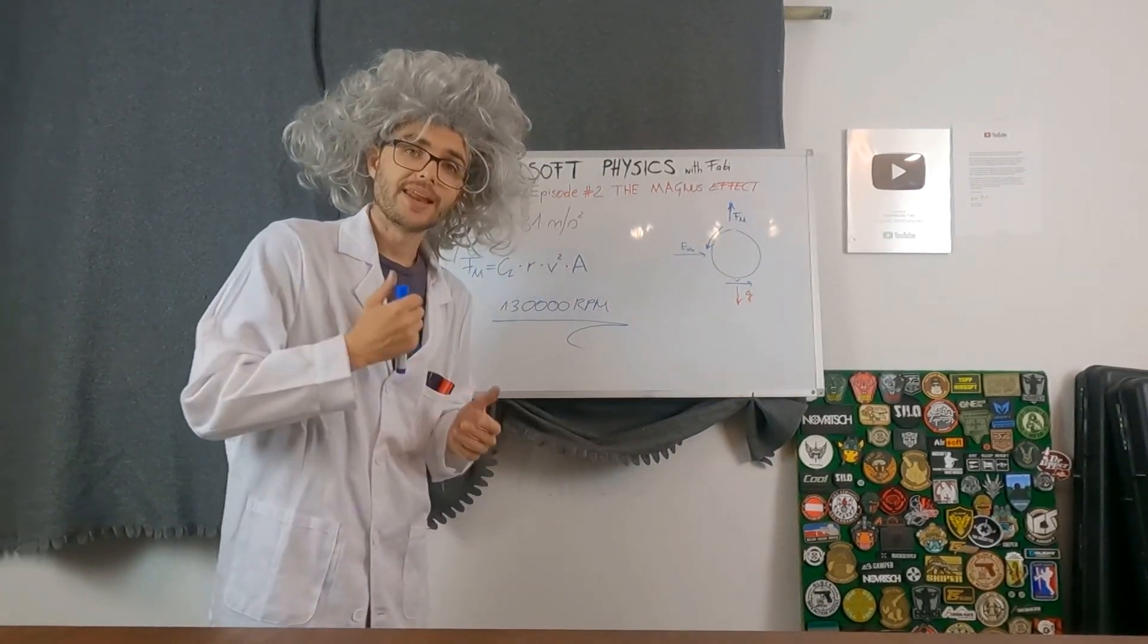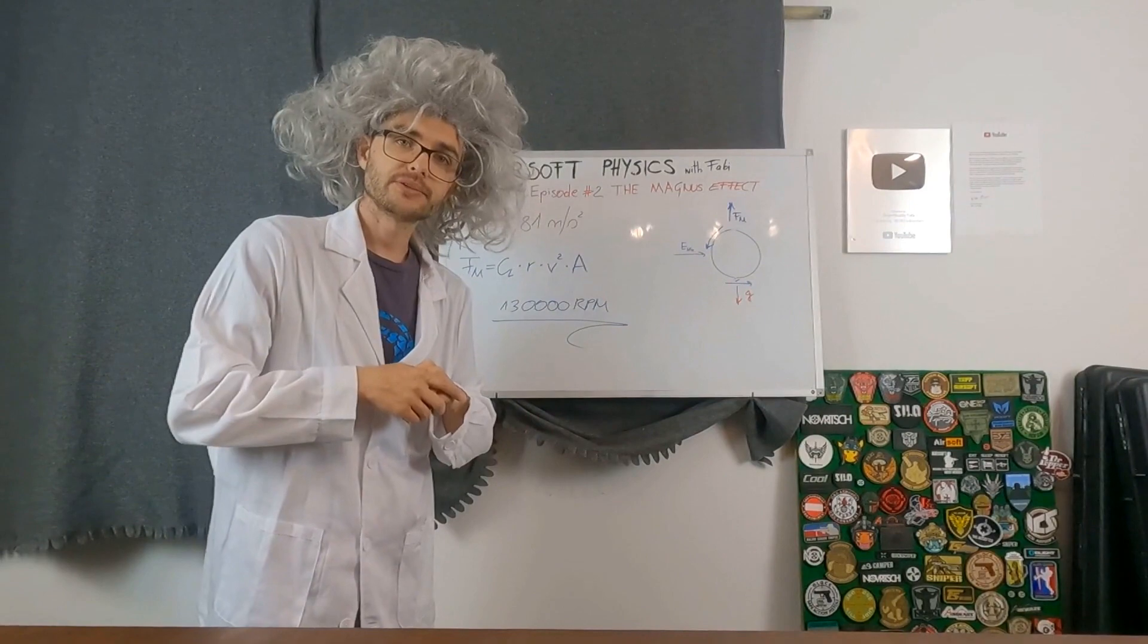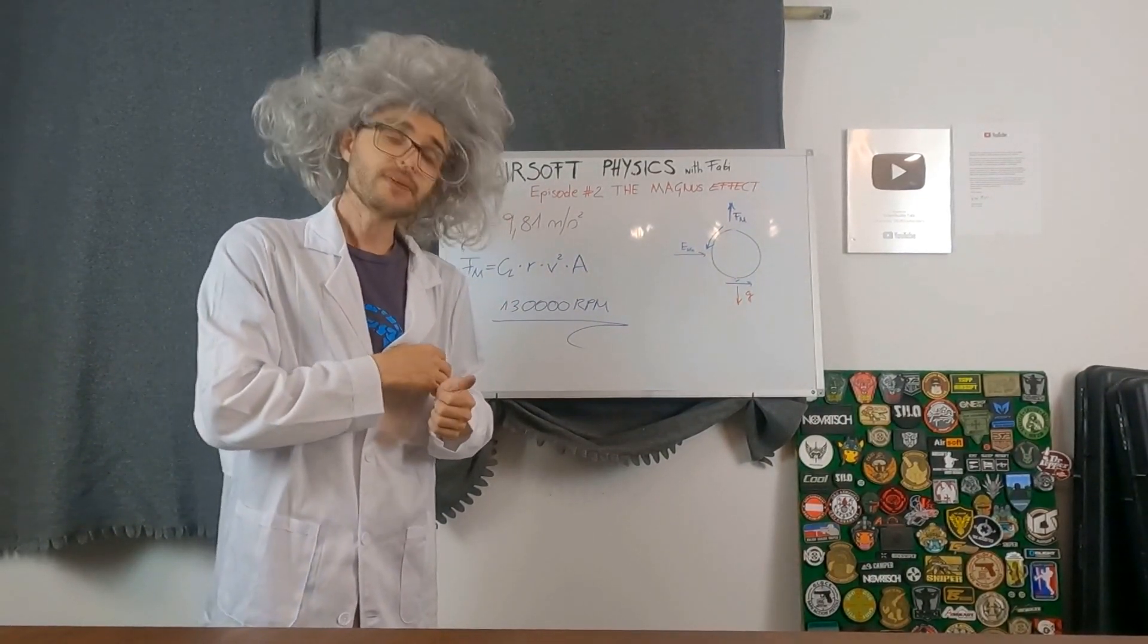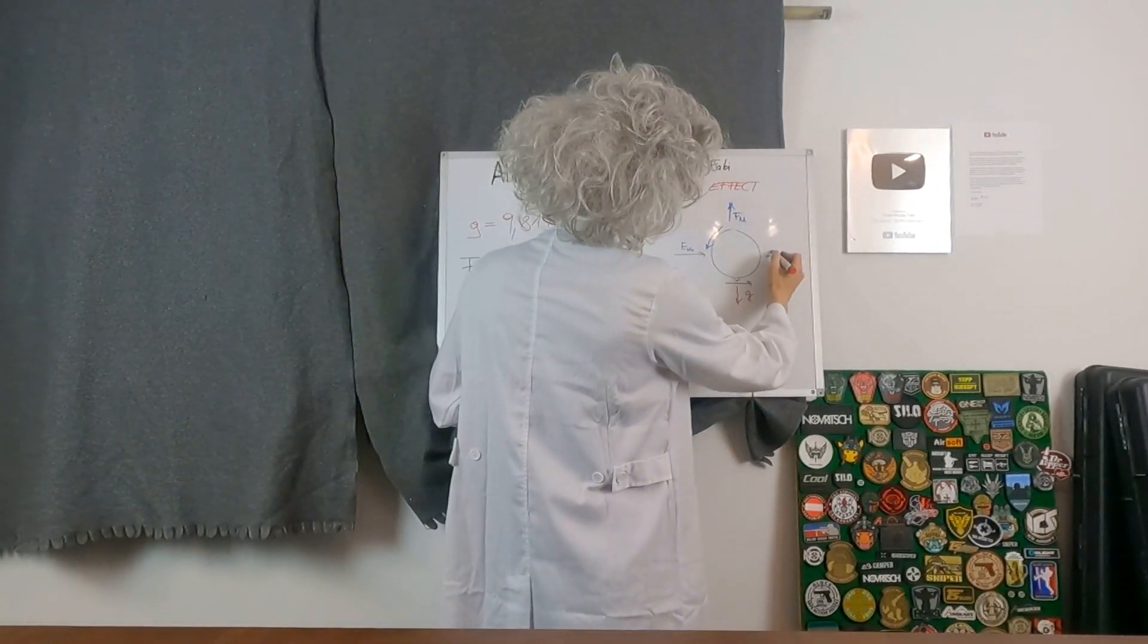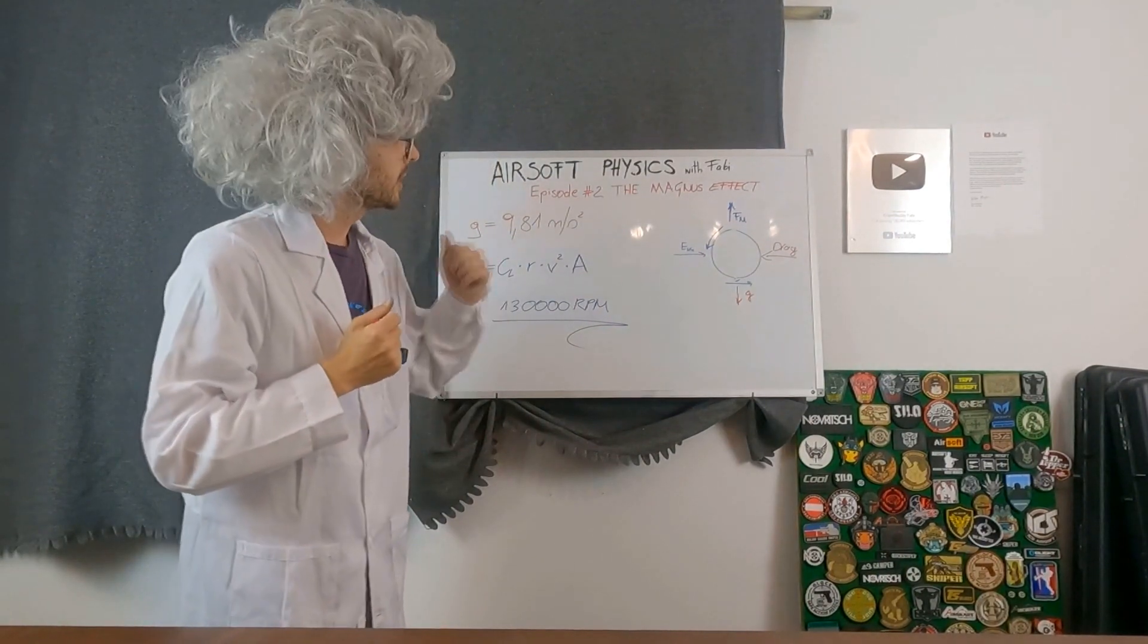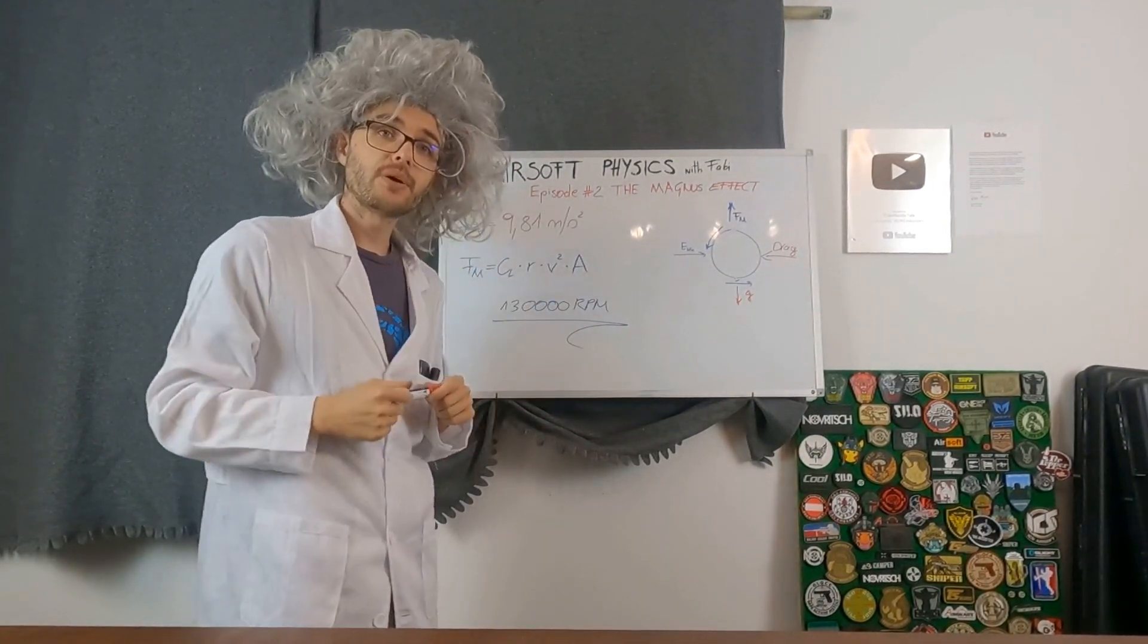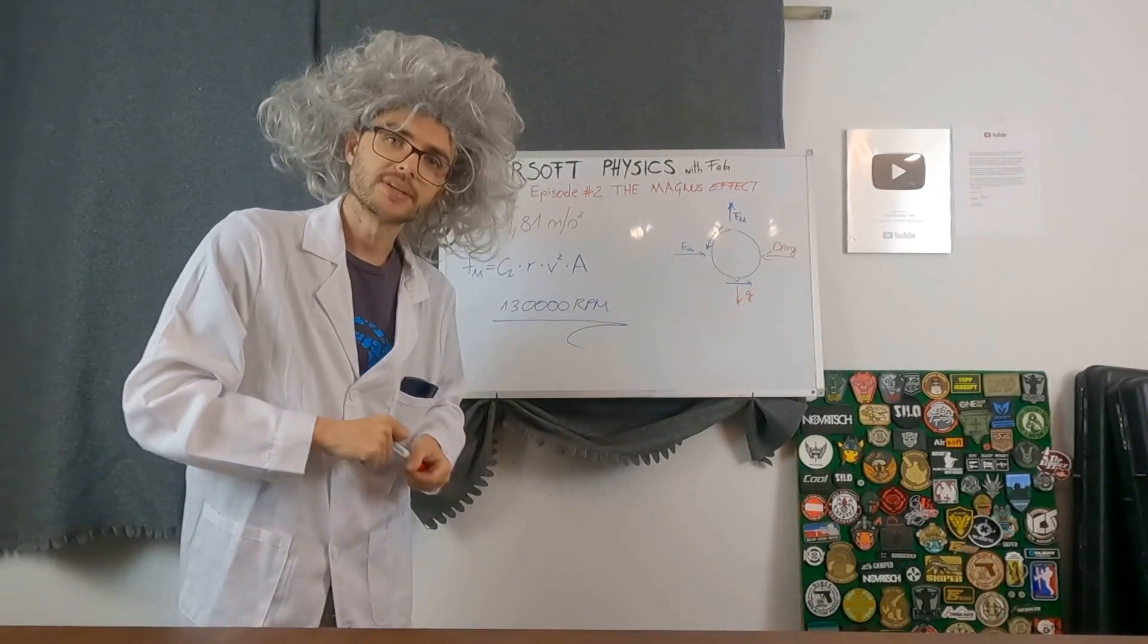Now that we have talked a lot about the Magnus effect, you could think if I just produce enough Magnus force my BB will fly forever. But we have talked about that on the last episode already. There is another force that affects our BB and it's called drag. And drag not only affects the speed of the BB, but it also affects the spin of the BB. So drag will reduce the spin of your BB over time, which results in, again, the BB will hit the ground eventually.